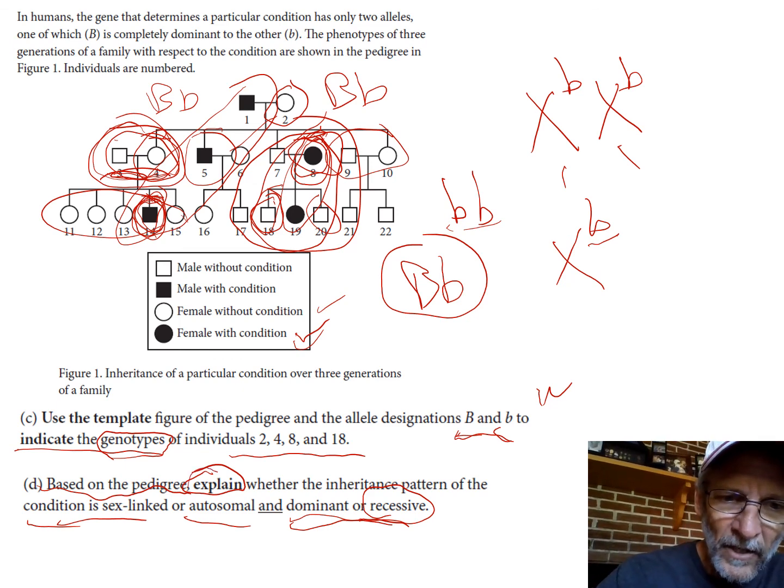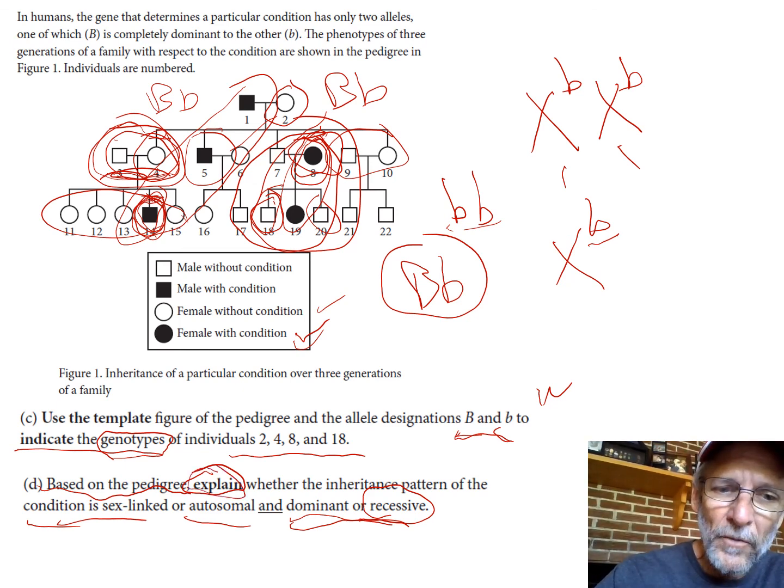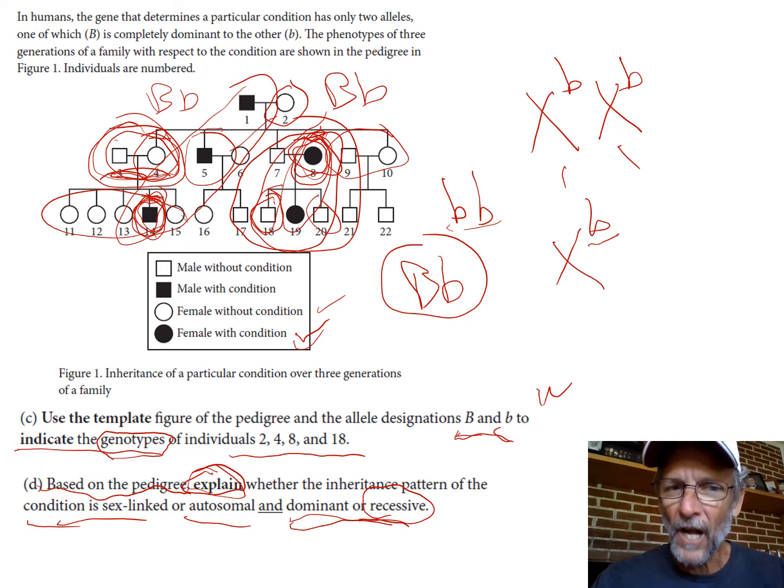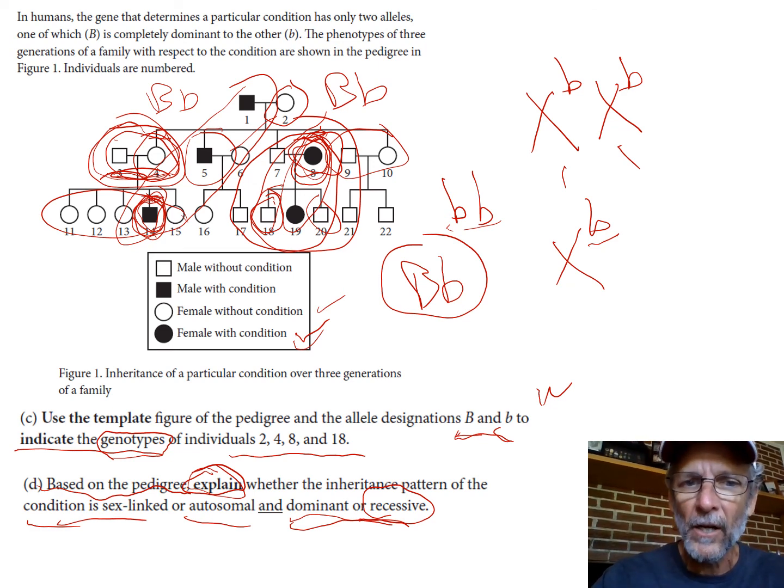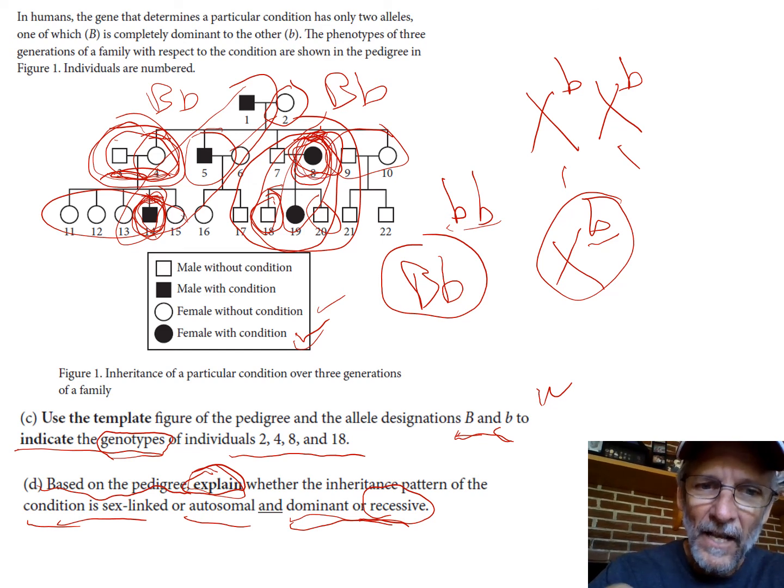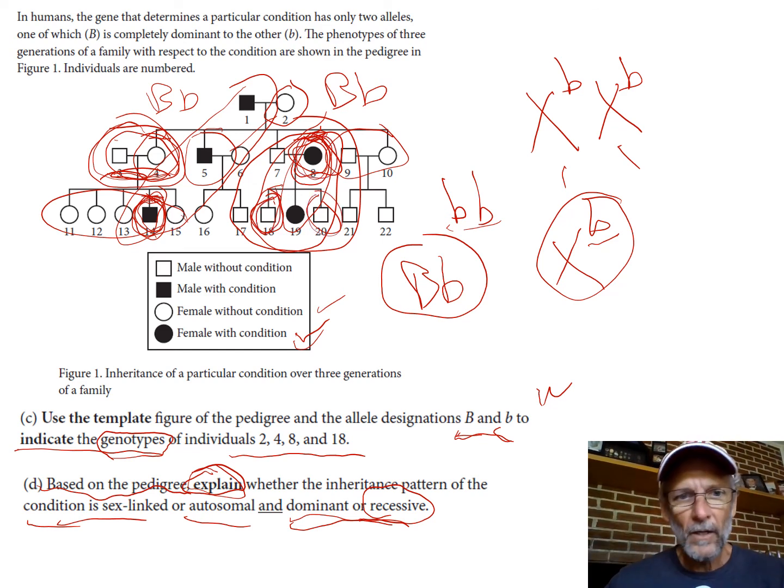They asked you to explain and they asked you base your explanation on the pedigree, so you should refer to these specific individuals, not just in general. Don't just say a mom with a sex linked recessive trait has to have all her sons recessive - say mom number eight and say sons number 18 and 20. All right, one more here.